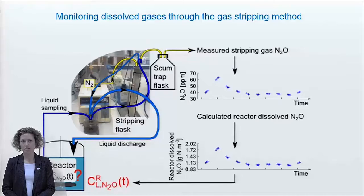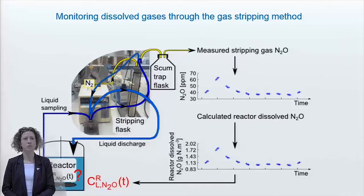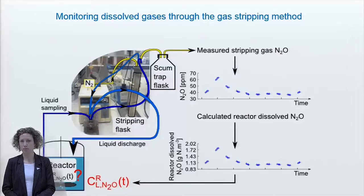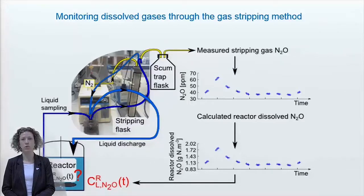We are going to apply this method to monitor the concentration of dissolved N2O. N2O is a very strong greenhouse gas which is formed during biological nitrogen removal from wastewater. However, the gas stripping method as such is more general and can also be applied to monitor the concentration of dissolved gases other than N2O.